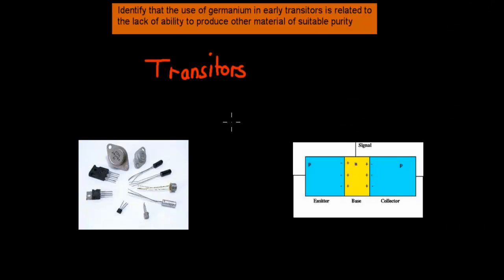I'm going to talk about this dot point now. The reason why I want to talk about it is because I want to quickly talk about semiconductors again. Semiconductors can be made up of two elements: silicon, which is one of the actual elements that makes up semiconductors, or germanium.